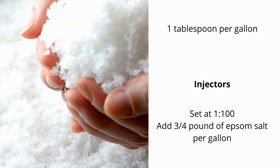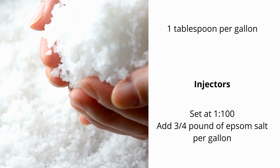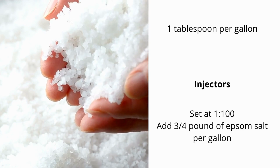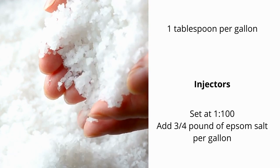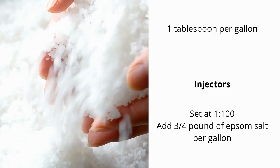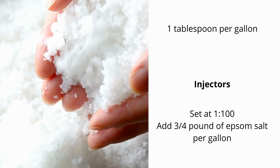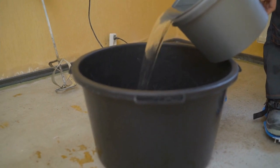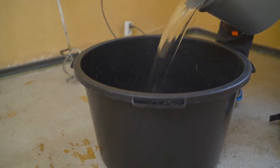Use Epsom salts at one tablespoon per gallon of water. If you have your injectors set at 1 to 100, then add three-quarter pounds of Epsom salts per gallon in the stock tank. That will give you three-quarter pounds of Epsom salts per 100 gallons, since your injector will inject one gallon of stock tank solution per every hundred gallons that flow through the system.